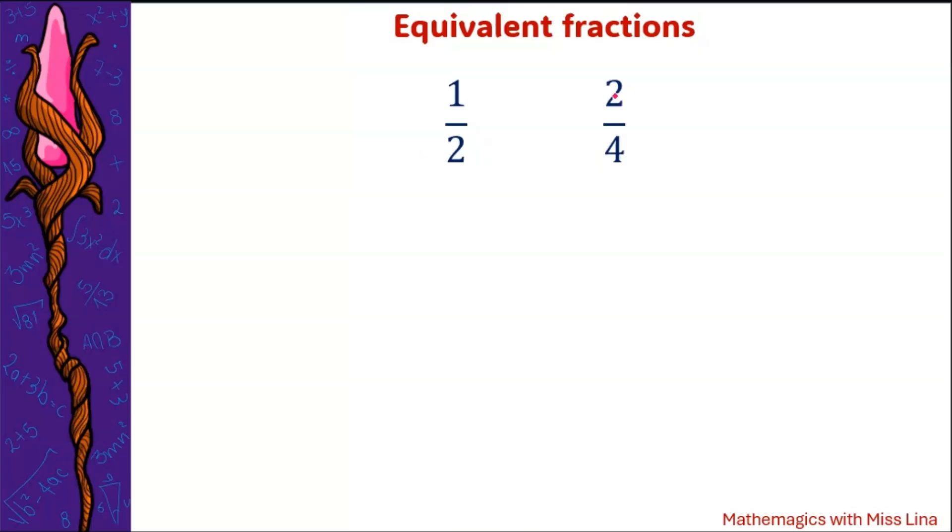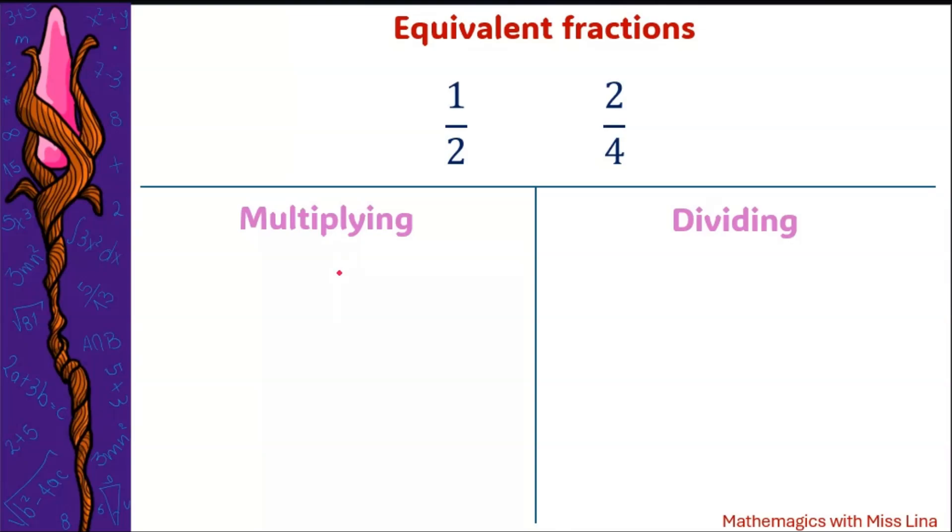But then how do we go from one half to two fourths or from two fourths to one half? We could do a multiplication or division. Important thing, we should multiply or divide both numbers top and bottom by the same number. So for example if we start in the smallest one, one half, and we want to get two fourths, we are going to multiply by the same number top and bottom. So from one to get the two and from two to get the four, we need to multiply by two. Then we are going to get one times two is two, two times two is four. That's how we get that one half is equal to two fourths.